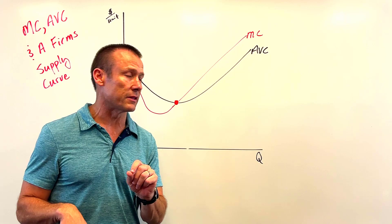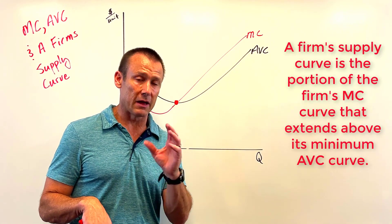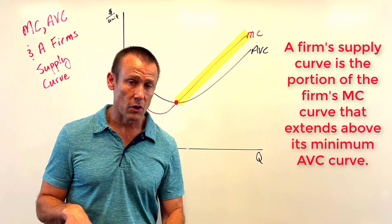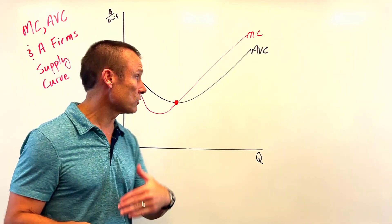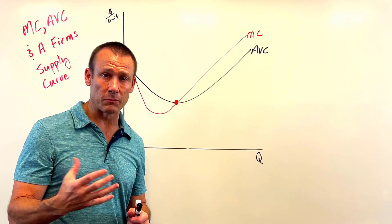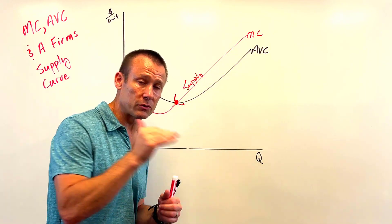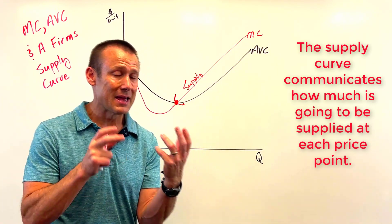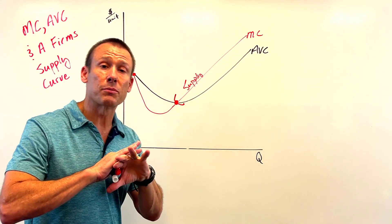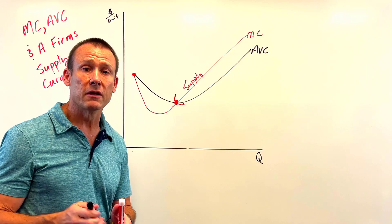Generally, the supply curve is the marginal cost curve. But for a single firm it's more nuanced: the supply curve is the portion of the marginal cost curve that lies above the AVC curve. If the price is below AVC, the firm is going to shut down and not produce anything. A supply curve tells us the quantity we're going to supply at every single price point — so if prices are below AVC, we're not producing at all.